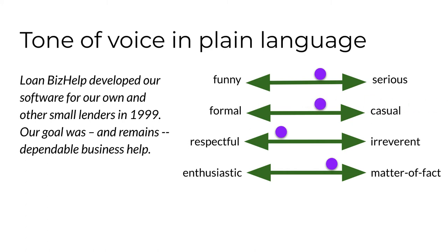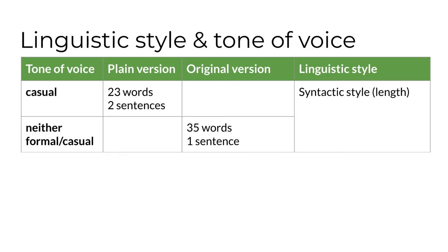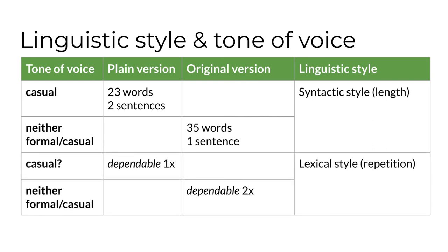Let's consider how I altered linguistic style to create the plain language version and whether that affected tone of voice. The syntactic style of the plain version is shorter overall — shorter sentence length — which I think is part of what leads to the more casual tone of voice. Another difference is the lack of lexical repetition: the original used the word dependable twice, while the plain version used it just once. I'm not really convinced this one change alone altered the tone of voice — we actually need to test in order to find out.